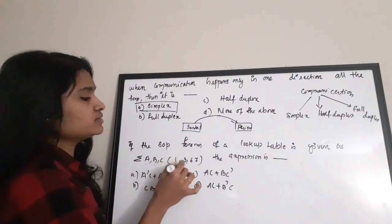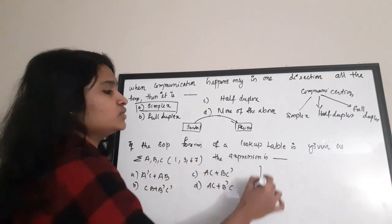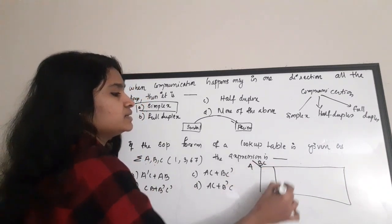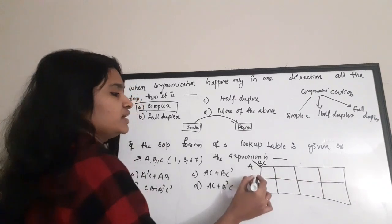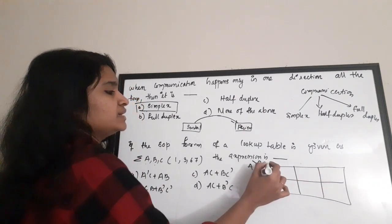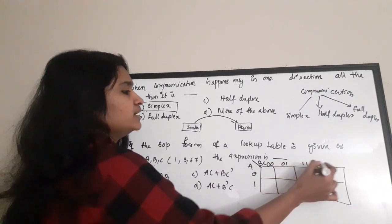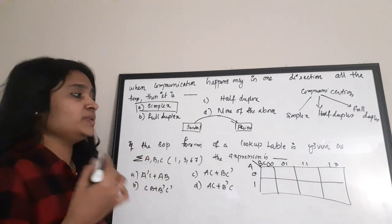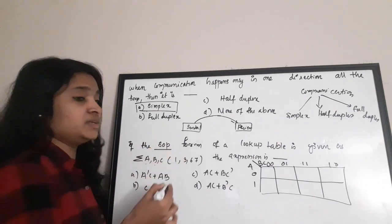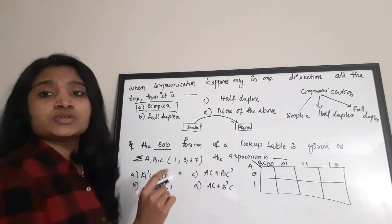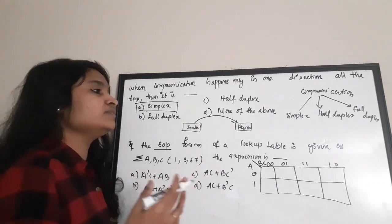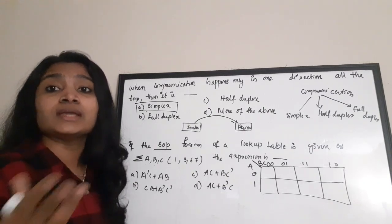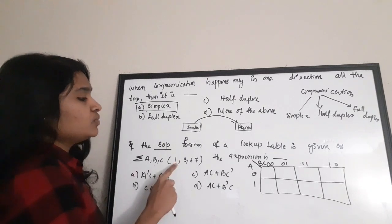Next question: if the SOP form of a lookup table is given as sigma(a, b, c) = sigma(1, 3, 6, 7), the expression is? To solve this, we draw a three-variable K-map with variables a, b, c. We mark ones at positions 1, 3, 6, and 7. If you have doubts about K-map simplification, please watch the dedicated videos on that.